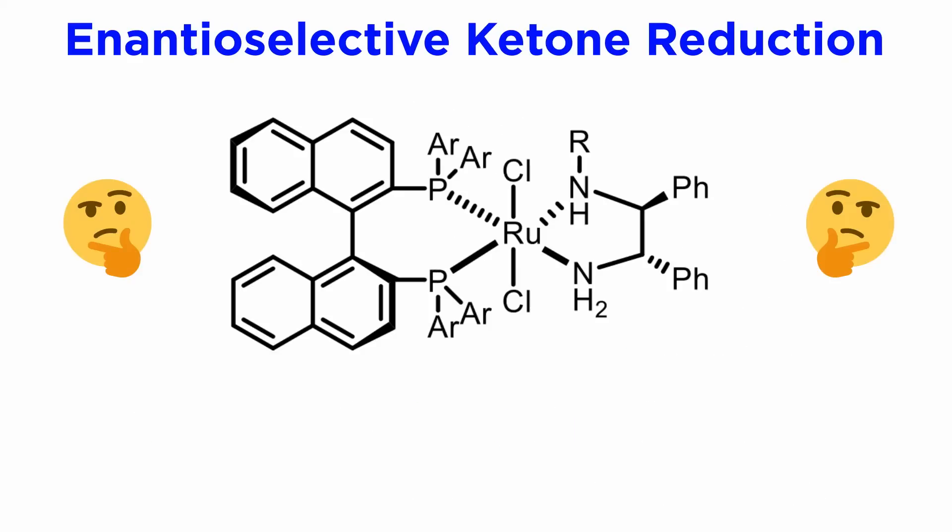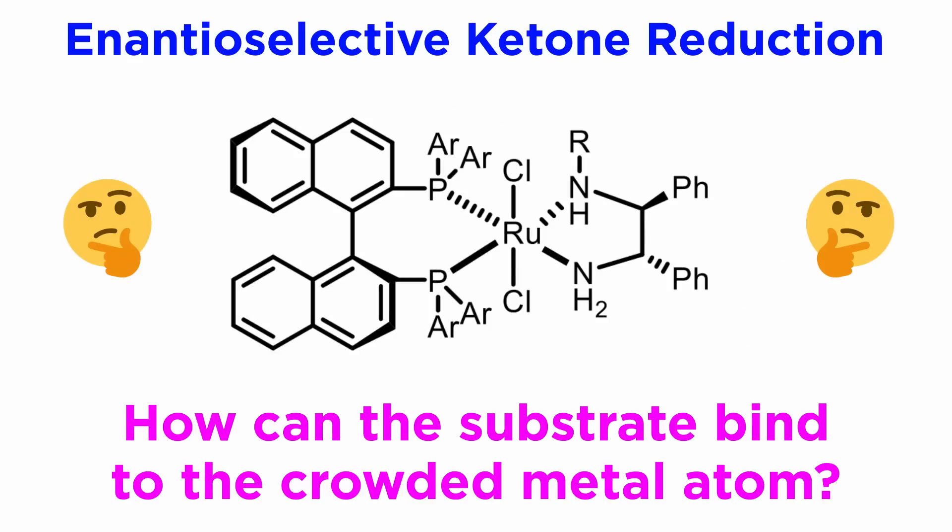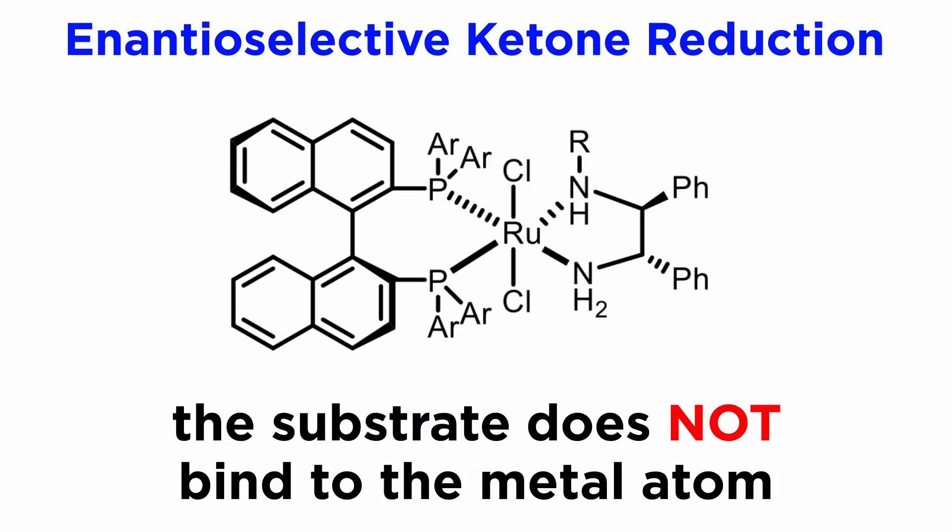Now upon looking at the structure of the catalyst carefully and critically, you may have thought: isn't the ruthenium center here a bit too coordinated with chiral elements? How in the world can the substrate bind to the metal with all these chelating ligands stuck around it? The answer is simple, and perhaps rather surprising — it doesn't. This is an example of an outer shell mechanism.